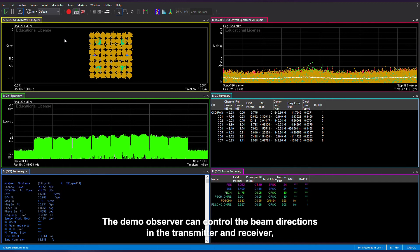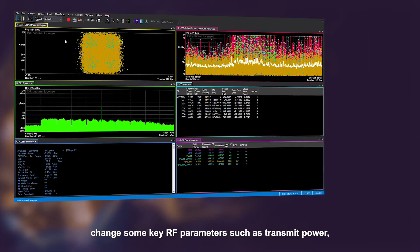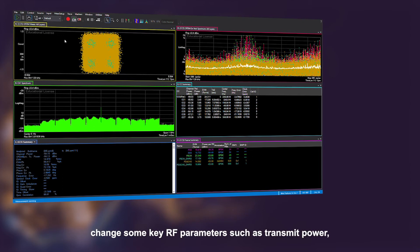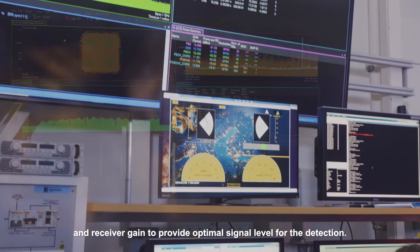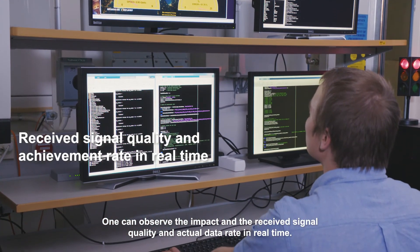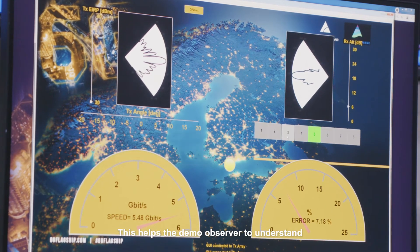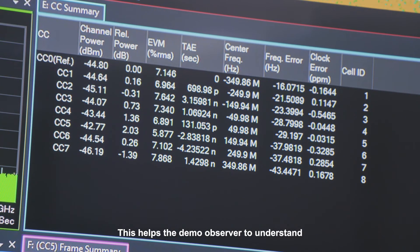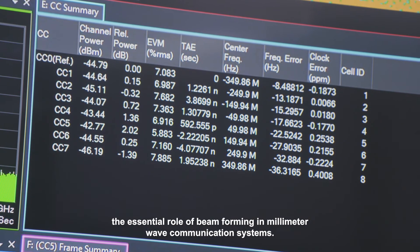The demo observer can control the beam directions in the transmitter and receiver, and change some key RF parameters such as transmit power and receiver gain to provide optimal signal level for detection. One can observe the impact on the received signal quality and achievable data rate in real time. This helps the demo observer to understand the essential role of beamforming in millimeter wave communication systems.